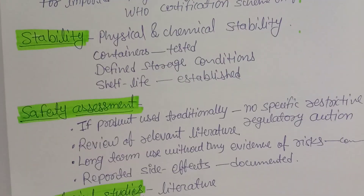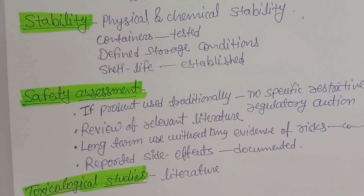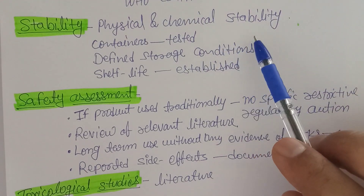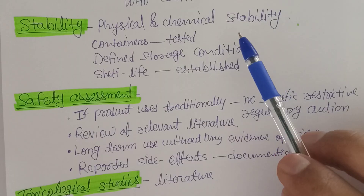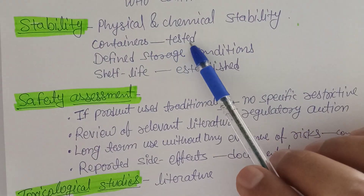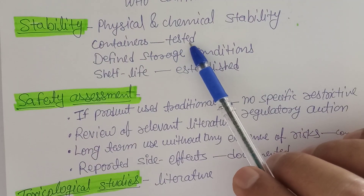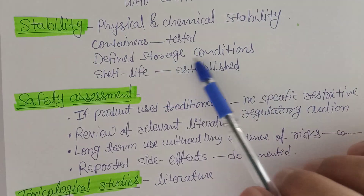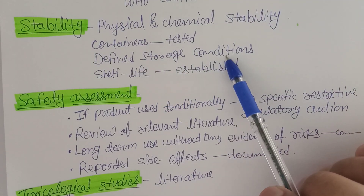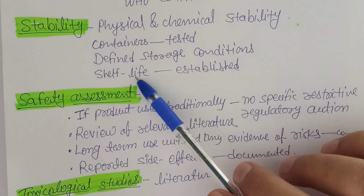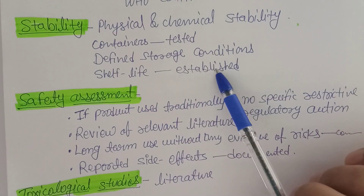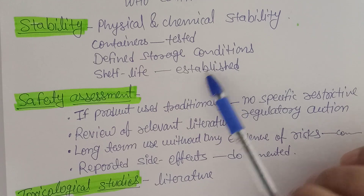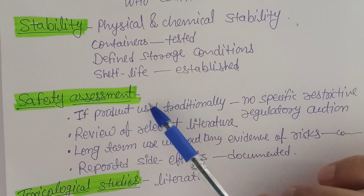Regarding stability, physical and chemical stability must be established. Containers must be tested for compatibility with the herbal medicine packaging. Defined storage conditions must be stated, the shelf life of the product must be established, and this information must appear on the label.